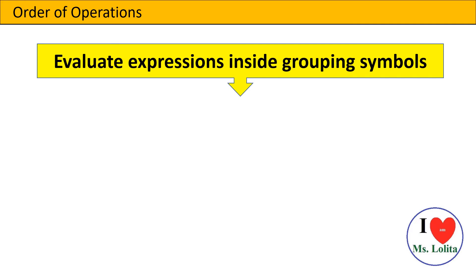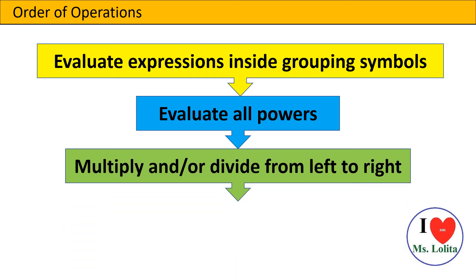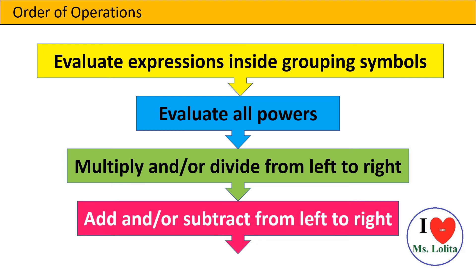Let us discuss the steps in the order of operations so that you're not going to be lost and your answer will always be correct. First, evaluate expressions inside grouping symbols. Next, you are going to evaluate all the powers. Then you are going to multiply and or divide from left to right. And the last step is add and or subtract from left to right also.